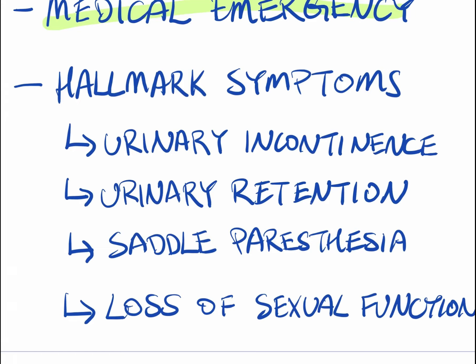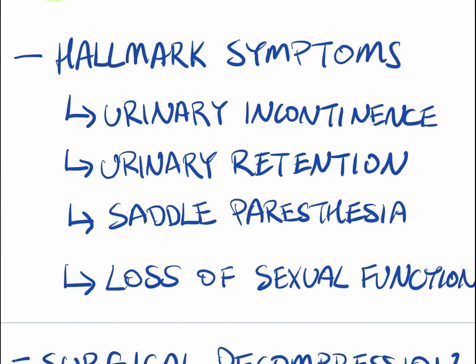Saddle paresthesia is another hallmark symptom. Paresthesia refers to pins and needles, numbness, and tingling. Saddle paresthesia specifically refers to the areas of your body that would be in contact with a horse's saddle — so the groin, genitals, and inner thighs. Those areas experience pins and needles and numbness.